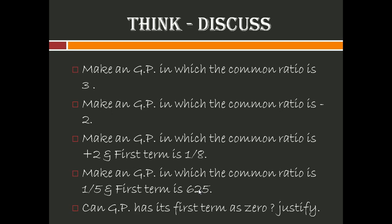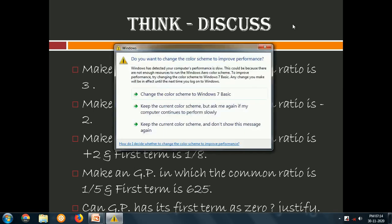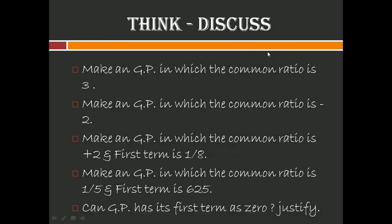Now let us try to solve some basic problems. First: make a geometric progression in which the common ratio is 3. Each time you multiply by 3 — starting with 1, you get 1, 3, 9, 27, and so on. Second: make a geometric progression in which the common ratio is −2. Note that negative times negative is positive, so be very careful with signs.